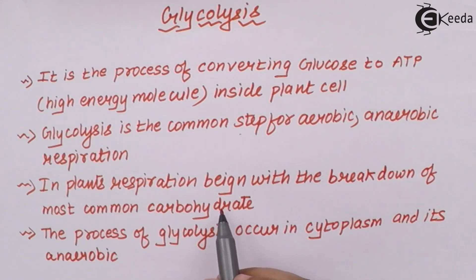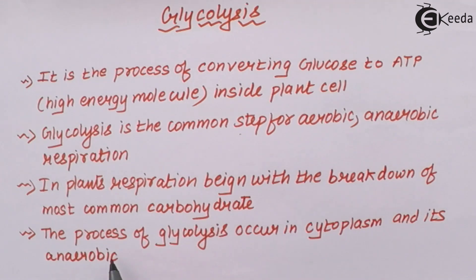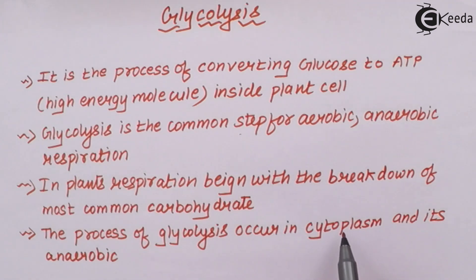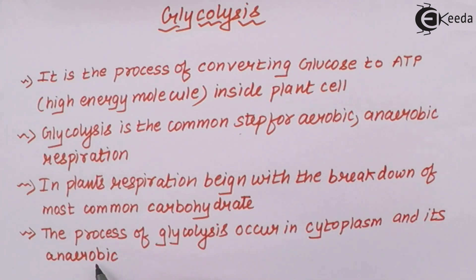Does glycolysis happen in human beings also? Think about it. The process of glycolysis occurs in the cytoplasm — the jelly-like substance inside the cell in which all the cell organelles are embedded. It is an anaerobic process, meaning it is not dependent on oxygen. Even if oxygen is present or absent, glycolysis will not be hampered or stopped.